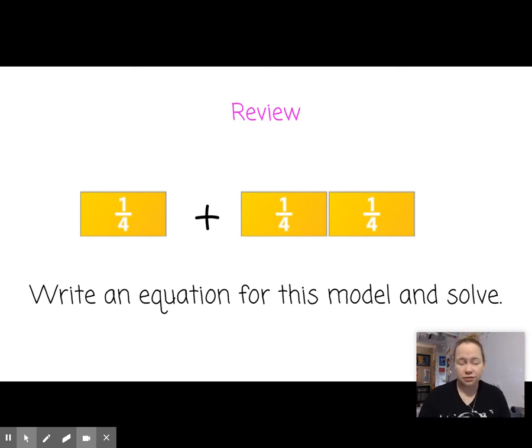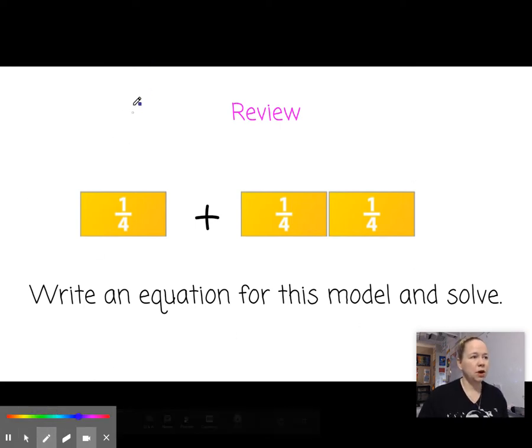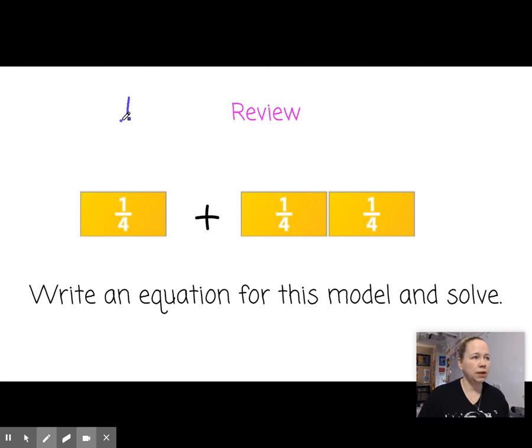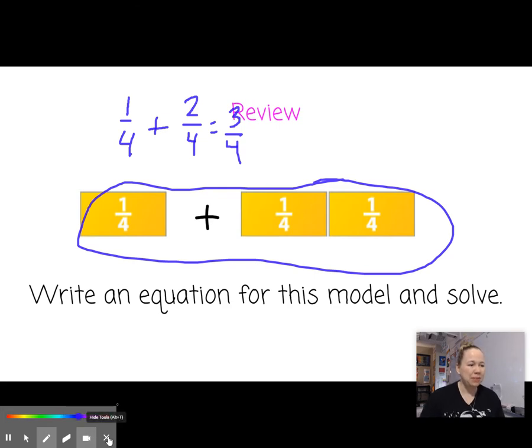Write an equation for this model and solve. Let's write the equation for this model. So our equation would be one fourth plus, there are two of them here, so plus two fourths. And what's our total? How many fourths do we have? Yeah, this was yesterday's lesson. We have three fourths. Okay, great. You remember. Good work.